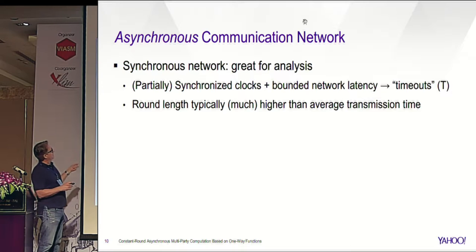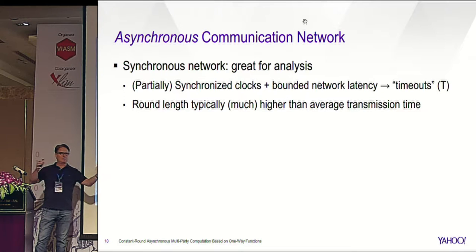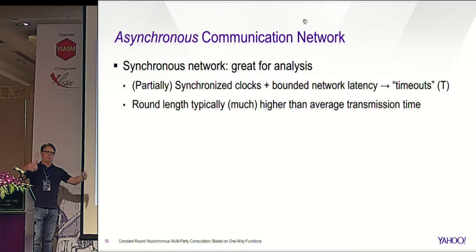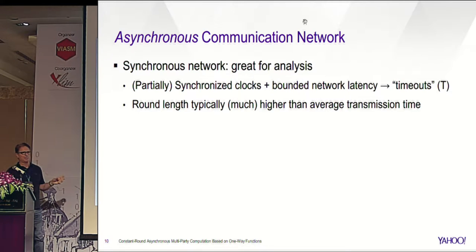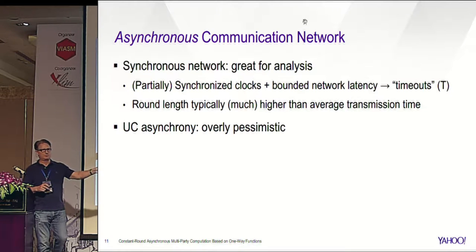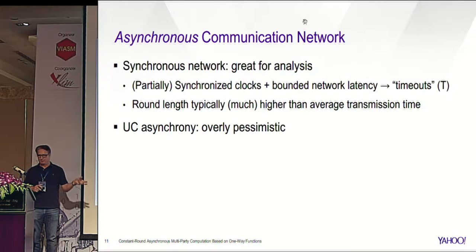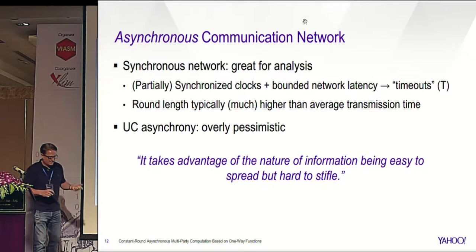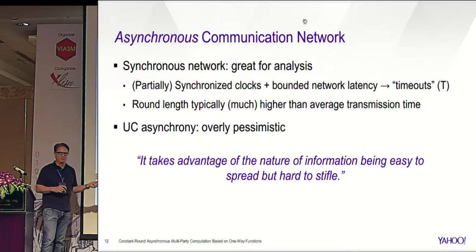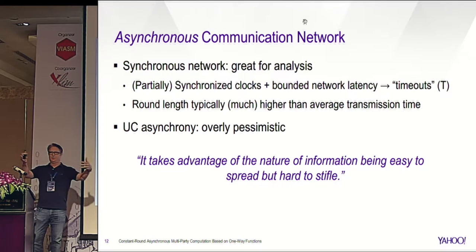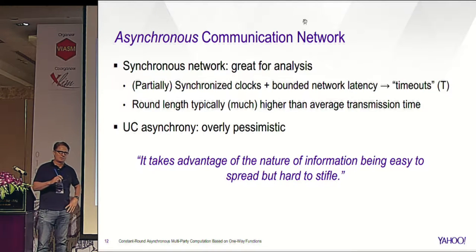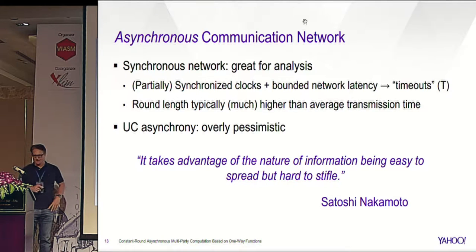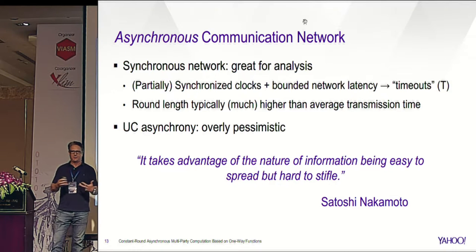A synchronous network is great for analysis — in practice you assume parties have roughly synchronized clocks and there's a time bound on message latency. But the round duration is an upper bound on latency, often higher than average transmission time — that's a drawback. On the other hand, the plain UC framework is totally asynchronous and overly pessimistic. As a quote from the blockchain era says, information diffuses — it's easy to spread and hard to stifle — suggesting the asynchronous network model is overly pessimistic.